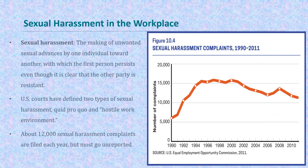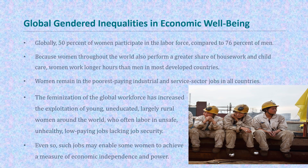Sexual harassment in the workplace is defined as the making of unwanted sexual advances by one individual toward another, with which the first person persists even though it is clear that the other party is resistant. U.S. courts have defined two types of sexual harassment: quid pro quo and hostile work environment. About 12,000 sexual harassment complaints are filed each year, but most go under-reported or unreported.